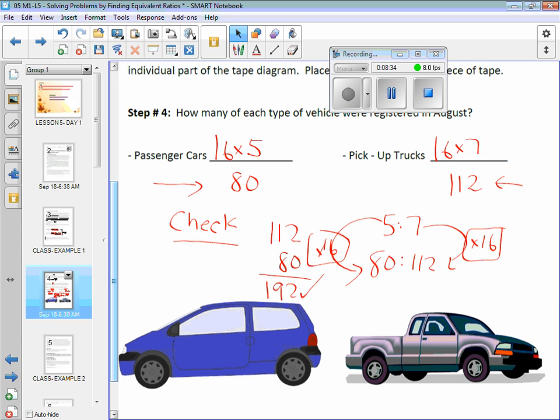Then to check our work, these two numbers have to add up to 192. That's from our original word problem. So we're good there. And then we can show that the two ratios, the original and the new one, to get from here to here we multiply by that constant that we found of 16. Not as good as the first time, but it'll have to do.